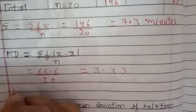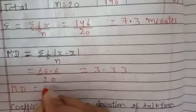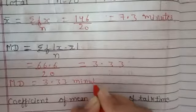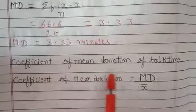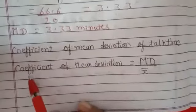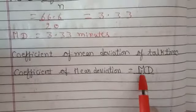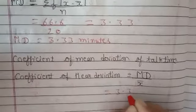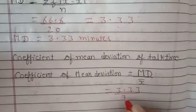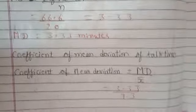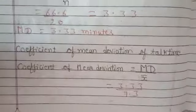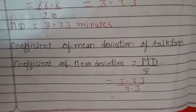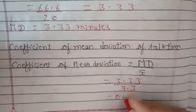Therefore, mean deviation is 3.33 minutes. Coefficient of mean deviation = mean deviation ÷ x-bar = 3.33 ÷ 7.3 = 0.46. So the coefficient of mean deviation is 0.46.